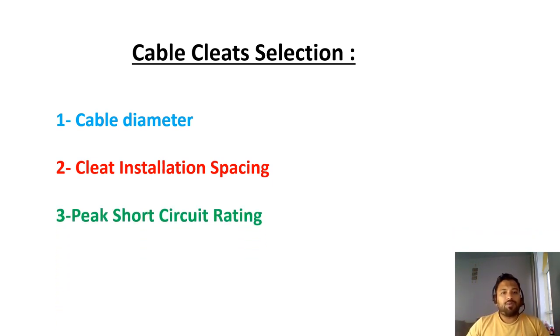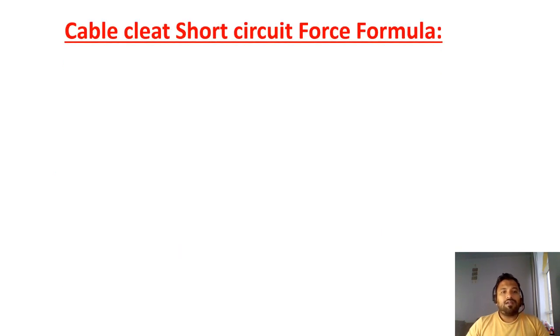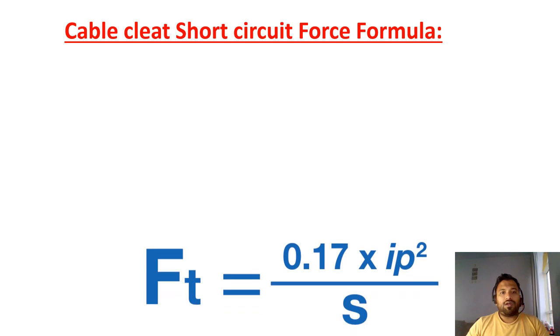Third thing is peak short circuit current rating. This can be get from the calculation. So it looks like this one. So you are on a cable ladder. You are installing a cable. Between cables, these you see these points are the cleats. Between the cleat distance, this D is the distance between the two cleats. Now we will see the cable short circuit formula. How it looks like.